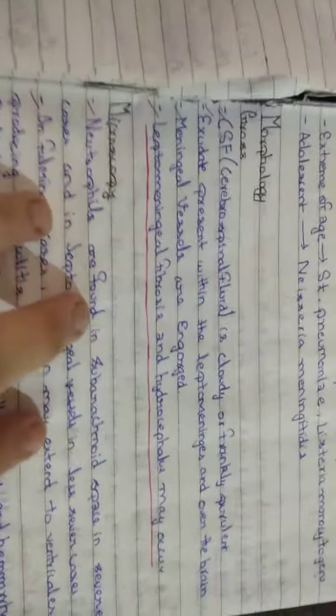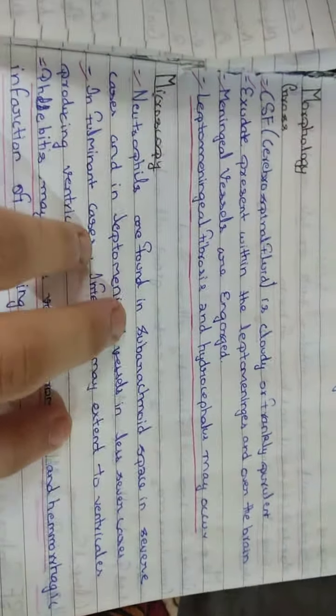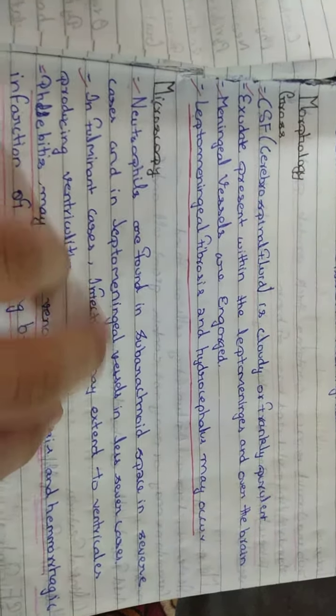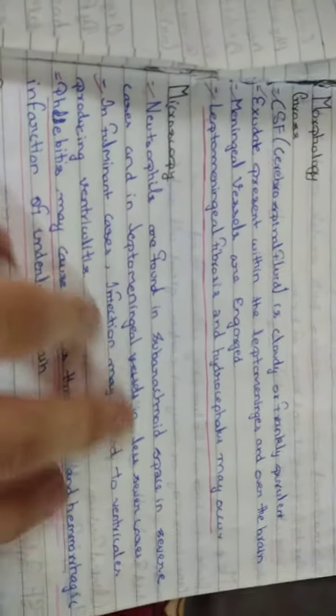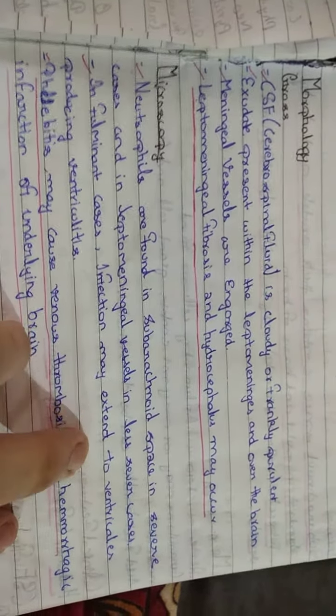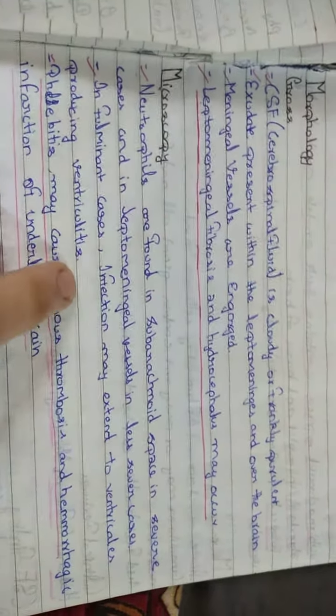Microscopic features: neutrophils are found in subarachnoid space in severe cases and in leptomeningeal vessels in less severe cases. In fulminant cases, infection may extend to the ventricles and produce ventriculitis.